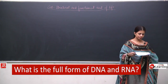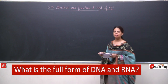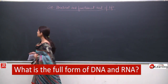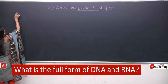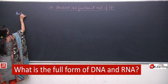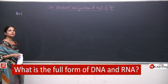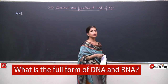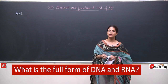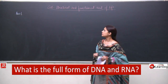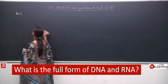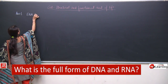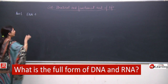Question number 1: What is the full form of DNA and RNA? The answer is deoxyribonucleic acid and ribonucleic acid. So we will write DNA and RNA over here.